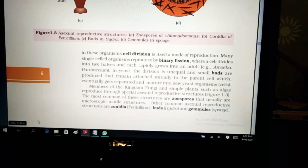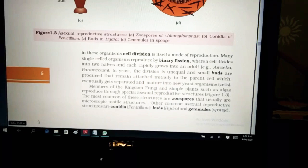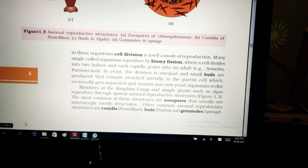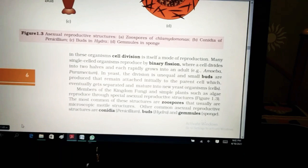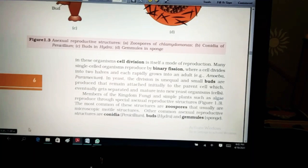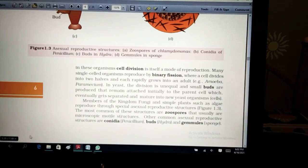In yeast, the division is unequal and small buds, the one I showed you, where the nucleus divided, then the bud formed and then afterwards, there is a detachment of the bud that remains attached initially to the parent cells and eventually it gets separated. Members of the kingdom fungi and simple plants such as algae reproduce through special asexual reproductive structures. The most common of these structures are known as the zoospores that usually are microscopic structures.